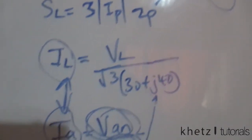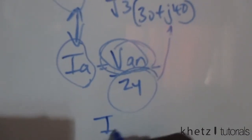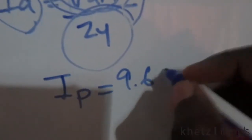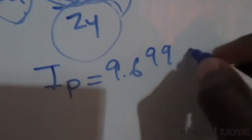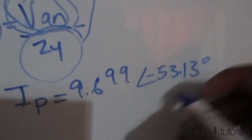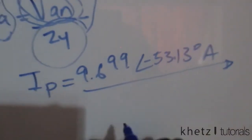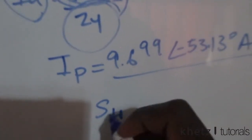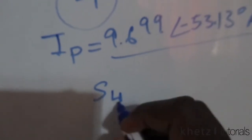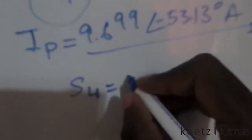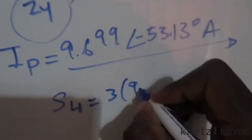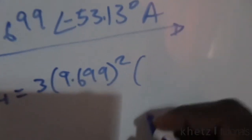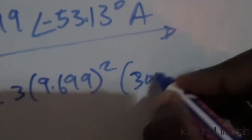After finding the line current, which equals the phase current for a Y load, the value is 9.699 amperes at an angle of negative 53.13 degrees. The complex power for load one, S_L1, is then 3 multiplied by 9.699 squared, multiplied by the impedance per phase of 30 plus j40.